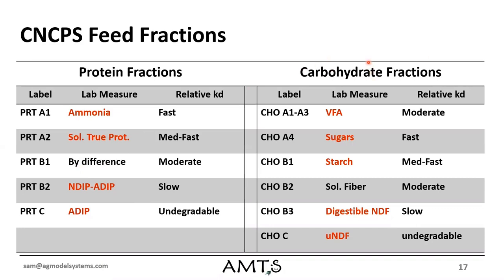On the carbohydrate side it's the same setup. The values we can actually measure in the lab are shown in red, and the B2 pool is also calculated by difference. That's why when characterizing a feed, if you see soluble fiber go negative it means the sum of all other pools adds up to more than the actual matter available — that's where error lands on the carbohydrate side. The red values on this page are the only analyses we really need to make the model work well.